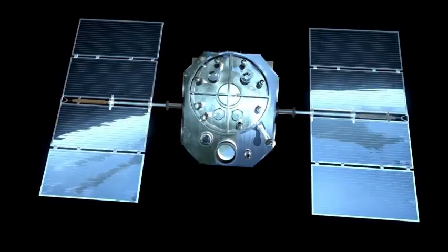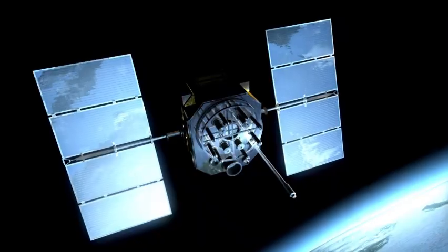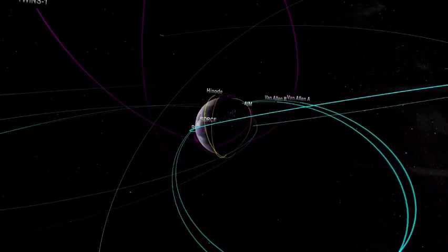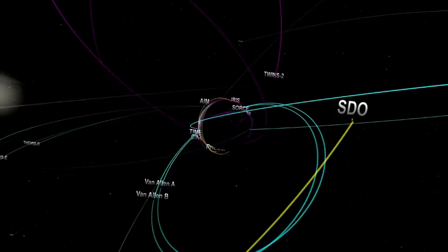With only a pencil, paper, and a 20th-century engineering mindset, Flandro made a startling discovery. During the late 1970s and early 1980s, an extraordinarily rare and favorable planetary alignment was due to occur.